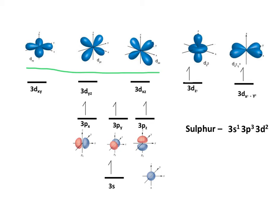However, the dz-squared has its lobes along the x-axis, and the dx-squared minus y-squared has its lobes along the x and the y-axis, like so. Therefore, it would make sense for us to choose those two to form our hybrid orbitals with our p and s orbitals.